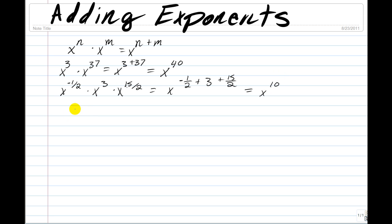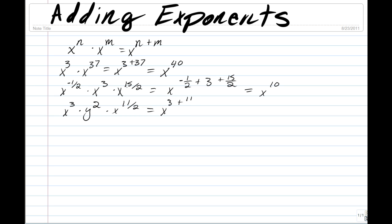You also have to keep in mind that you can only add exponents with similar variables. So if we have x to the power of 3 times y squared times x to the power of 11 over 2, that is going to be equal to x to the power of 3 plus 11 over 2, times